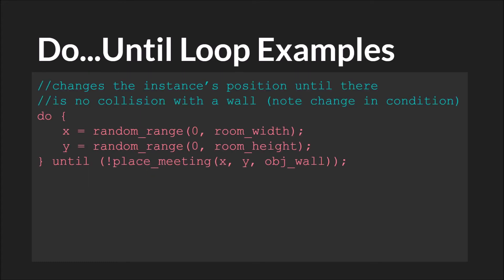So here we have a do until example. In this example, first we are picking x and y at random. Then we are checking for a place meeting. If this is false, we will go back and repeat this loop. If it is true, we will exit out. In other words, if it is true that there is no place meeting, then we found a free space and we'll continue with our code. But if it is false that there is no place meeting, which means that there is a place meeting, we will repeat this code.